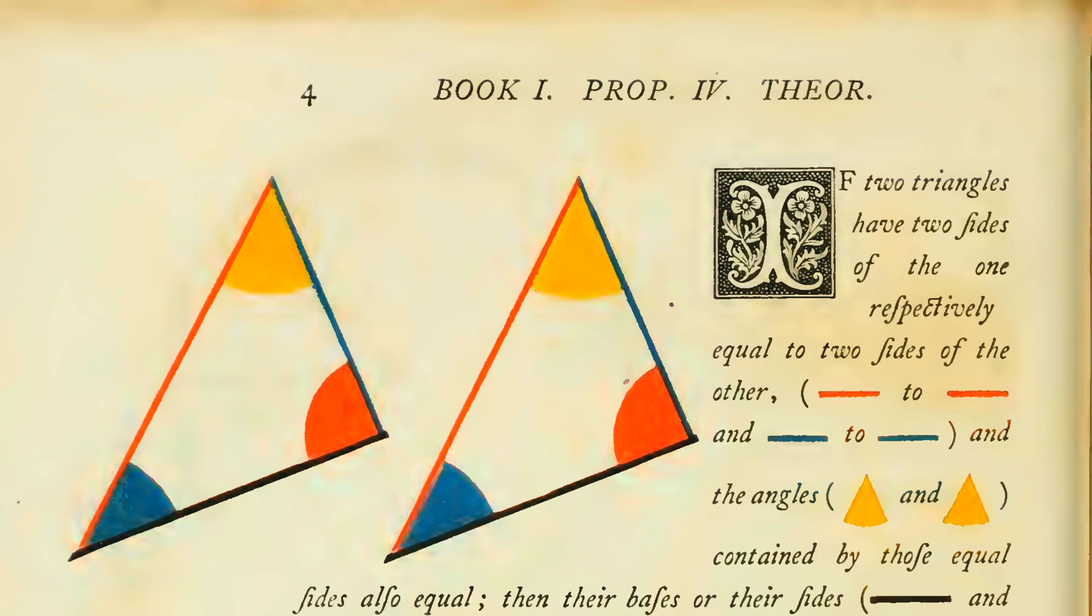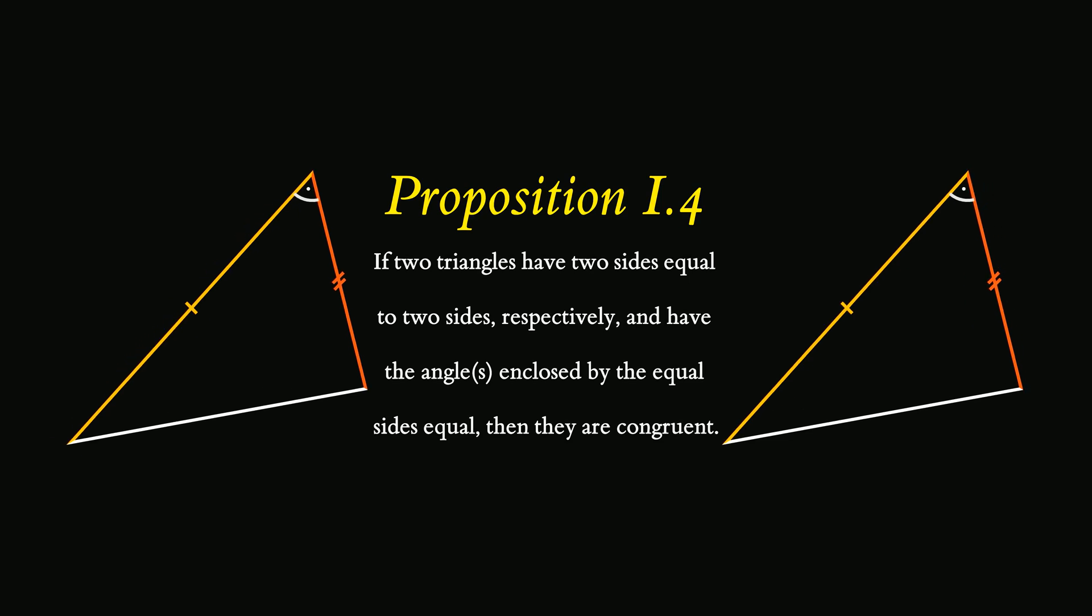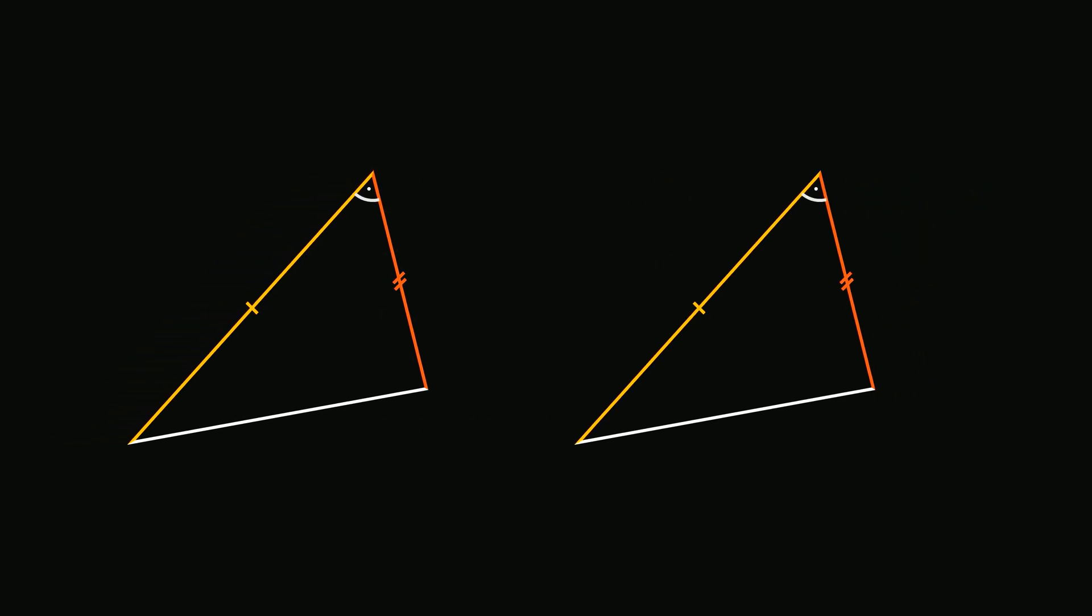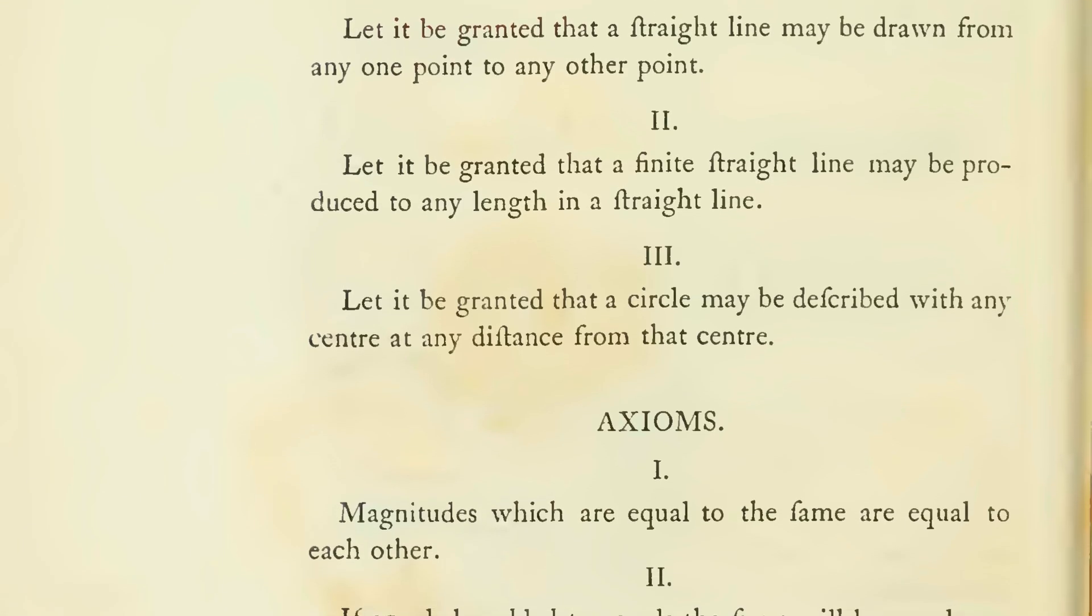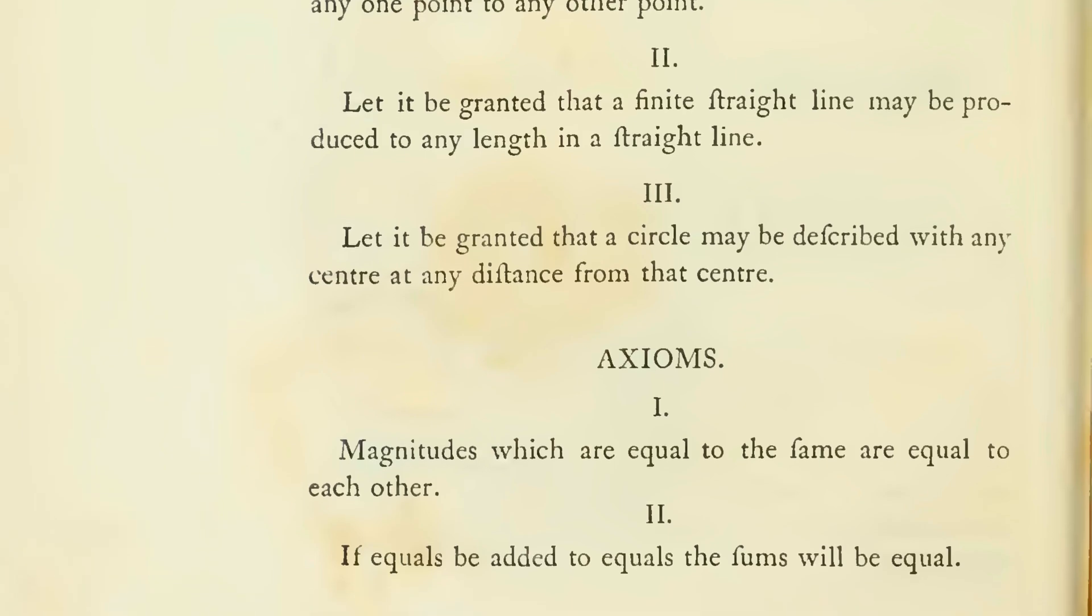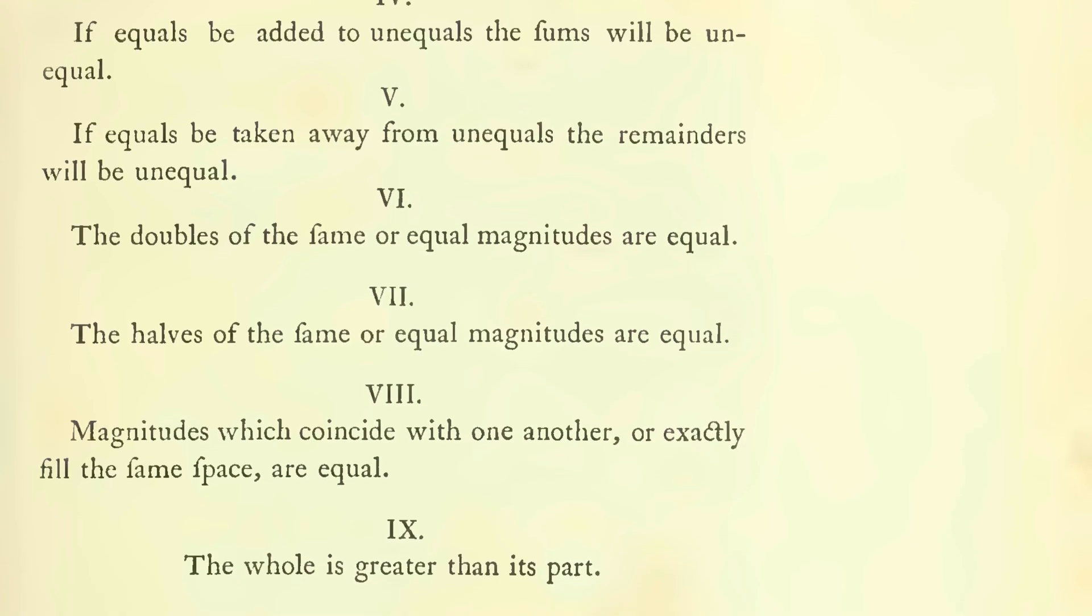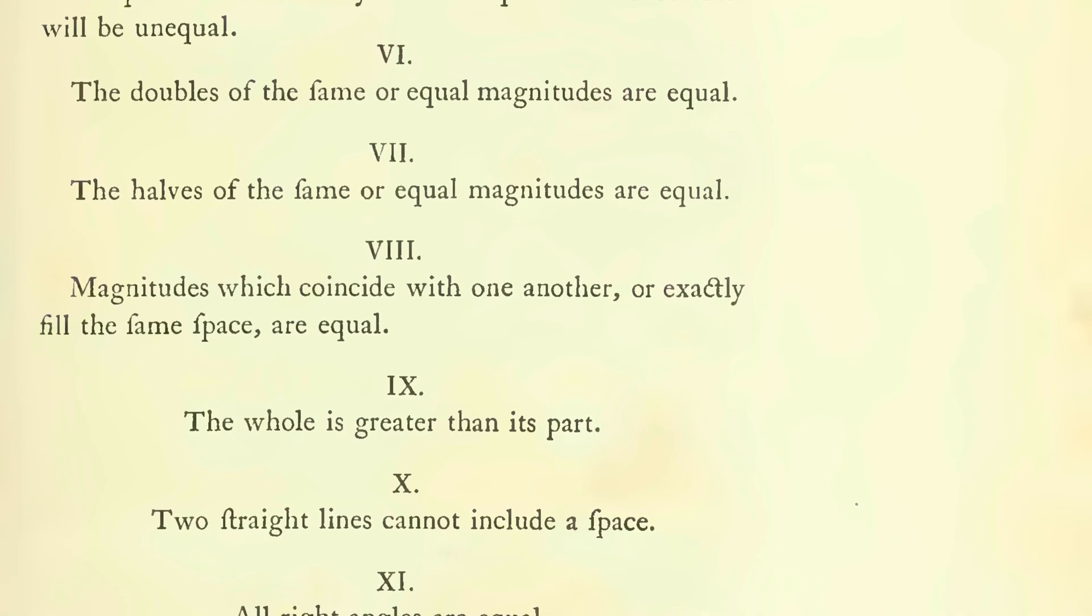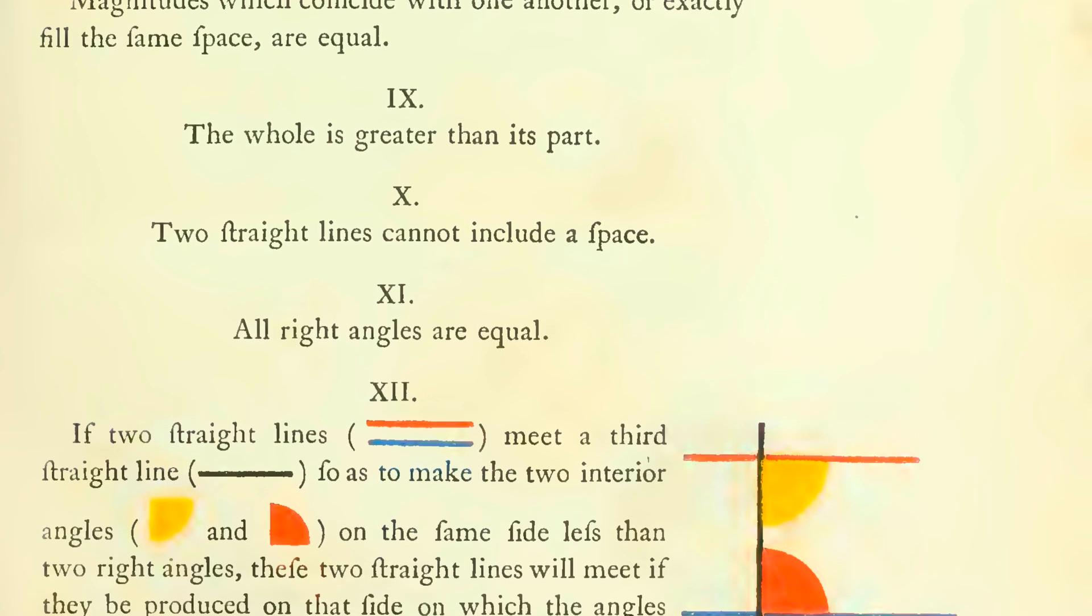In this proposition, Euclid presents strong reasoning for the side angle side congruency of two triangles. At the beginning of the proof, he intuitively moves one triangle to cover the other for comparison. However, there's no prior postulate or theorem that allows for this operation. To fix this, we need to add new postulates about angle or triangle congruency. Similar axiomatic gaps can be found elsewhere in the elements, and they too require additional postulates to be resolved.